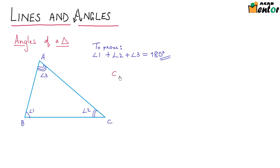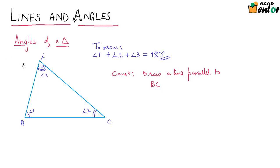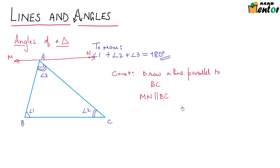So what would that construction be? We will draw a line parallel to BC. I will draw a line passing through A and parallel to BC. Let me call this line M and N. So we have drawn MN which is parallel to BC.